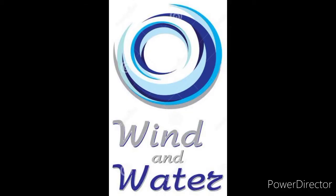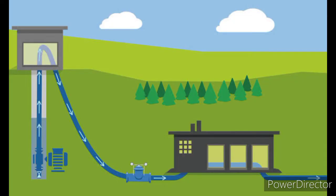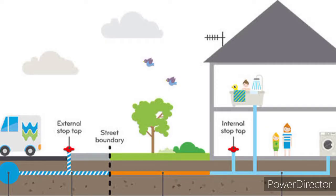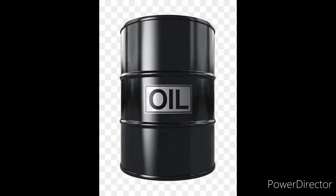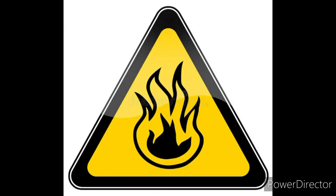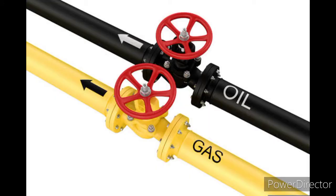Transporting water: water and wind are substances that flow, so pipes are used to transport these substances. Since ancient times, pipes or canals are used to transport water. Mineral oil and natural gas are combustible substances — combustible means substances that catch fire. So it is safer to transport these substances only through pipes.